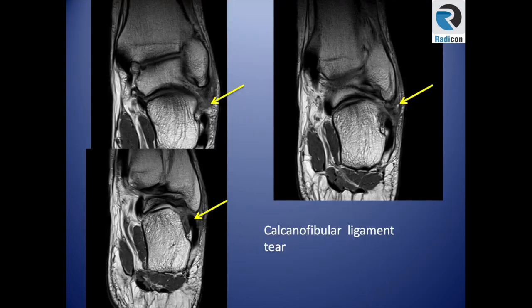For the calcaneofibular ligament, loss of the normal low signal intensity within the ligament with thickening indicates a tear. Here you can see the course of the calcaneofibular ligament extending deep to the peroneal tendon; it is thickened and edematous with no identifiable fibers — indicating an injured ligament.